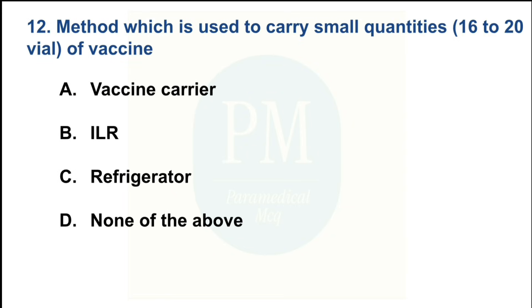Which method is used to carry small quantities of 16 to 20 vials of vaccine? Option A — vaccine carrier; Option B — ILR; Option C — refrigerator; Option D — none of the above. The correct option is Option A: vaccine carrier.